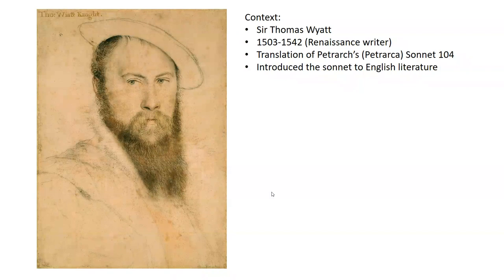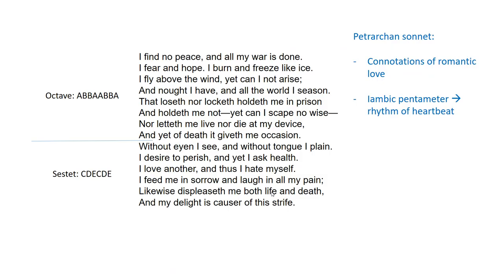The most important thing is that you understand this is a sonnet, that this is a translation of a sonnet, and what that means for a poem. Before I go into some of the language, I want to talk about what makes this a Petrarchan sonnet. It's 14 lines, consisting firstly of an eight-line section known as an octave, and then a six-line section known as a sestet. It follows an ABBA-ABBA rhyme scheme with a CDECDE rhyme scheme in the sestet.